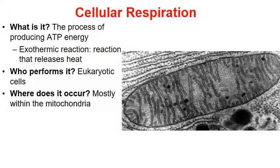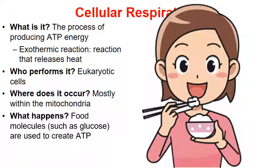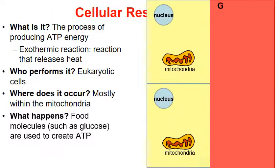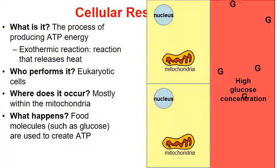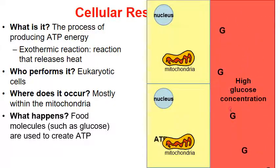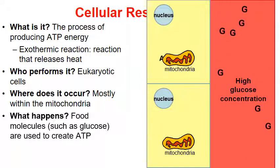Where does cellular respiration occur? We know it occurs in eukaryotic cells, but more specifically within the mitochondria — mostly within the mitochondria of eukaryotic cells. What happens during cellular respiration is that food molecules, such as glucose, are used to create ATP. After we eat a meal, glucose is absorbed into our bloodstream at high concentration. Through simple diffusion, glucose diffuses into the cells and particularly into the mitochondria, which will then start to produce a large amount of ATP.